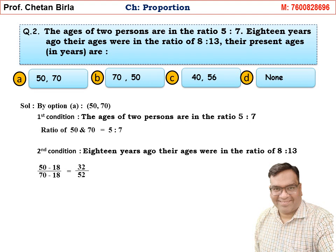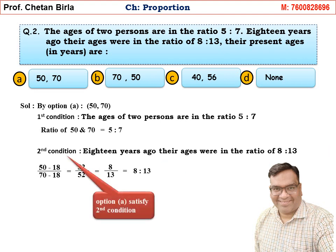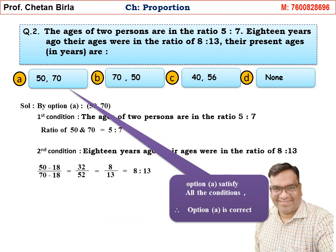So 32 and 52 — both go from the 4 times table: 4 × 8 = 32 and 4 × 13 = 52, giving the ratio 8 is to 13, which satisfies the second condition. Both conditions are satisfied by Option A, so Option A is the correct answer.